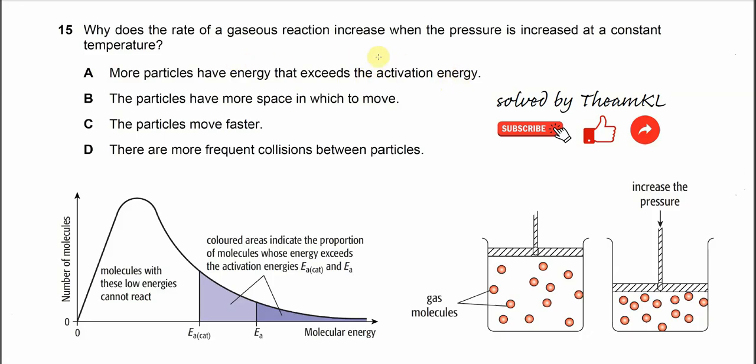Because it's already mentioned constant temperature, this means the Boltzmann distribution will not change, so it will not shift to the right-hand side. Eventually, more particles having energies that exceed the activation energy is not happening, so this is wrong.